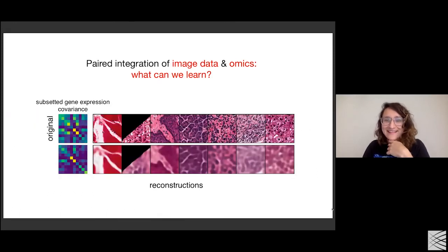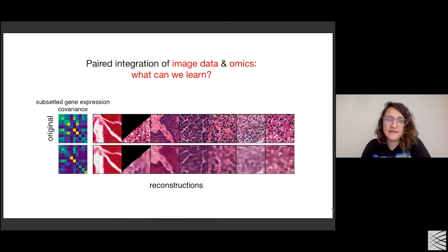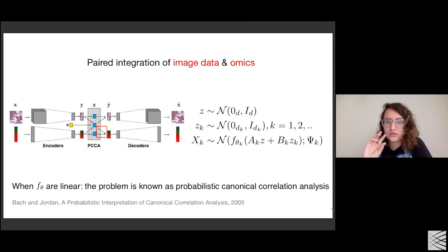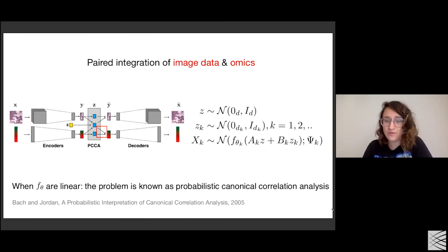Is that an analog of probabilistic PCA? And is there an analog of the theorem of Tipping and Bishop that in the Gaussian setting, the maximum likelihood solution really is just the linear canonical correlation? Yes, they're very related, but a little bit different in the sense that you can convert one into another. We can talk more about this offline in the question session.